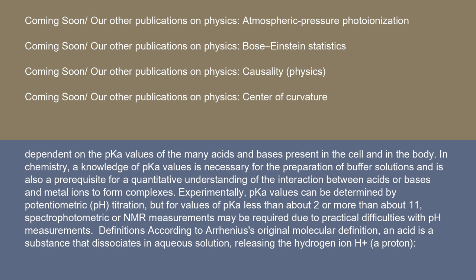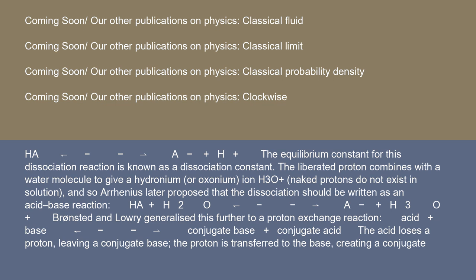According to Arrhenius' original molecular definition, an acid is a substance that dissociates in aqueous solution, releasing the hydrogen ion H⁺, a proton. HA → A⁻ + H⁺. The equilibrium constant for this dissociation reaction is known as a dissociation constant.